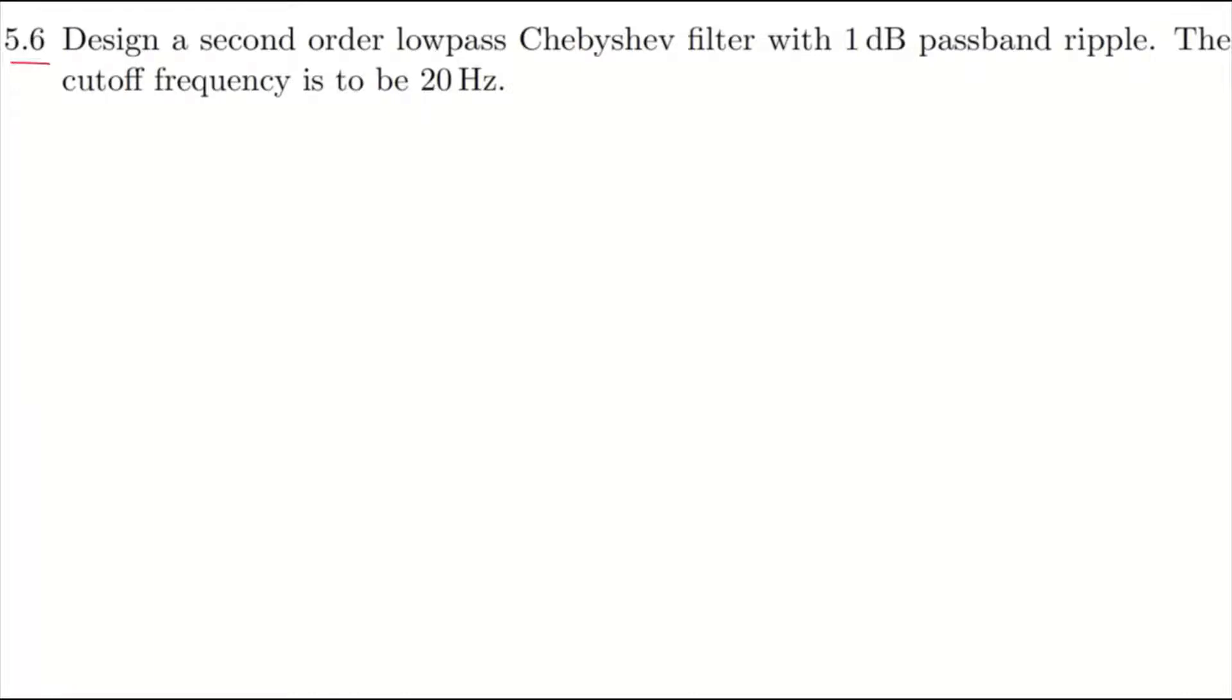Question 5.6: We're going to design a second order low-pass Chebyshev filter with 1dB passband ripple. We have passband ripple, and that means this Chebyshev filter is Type 1. The passband ripple is 1dB.